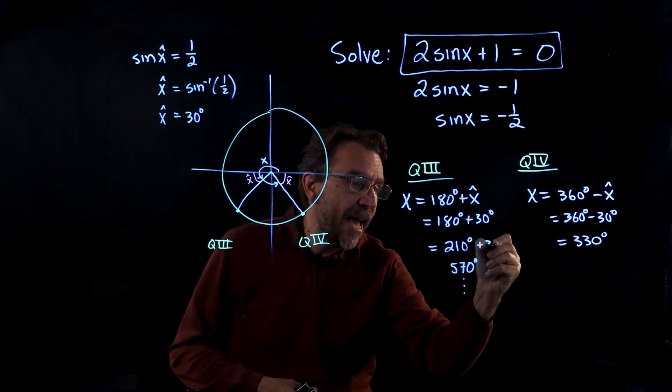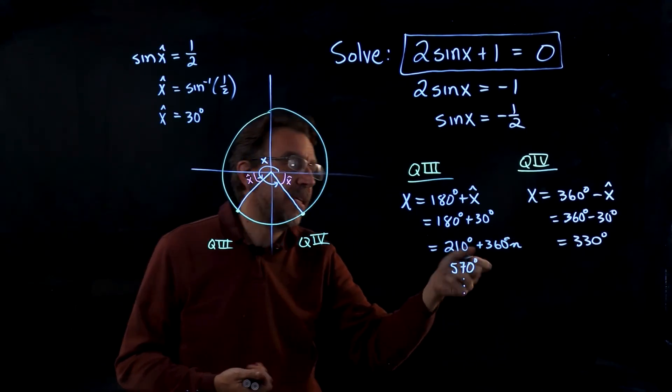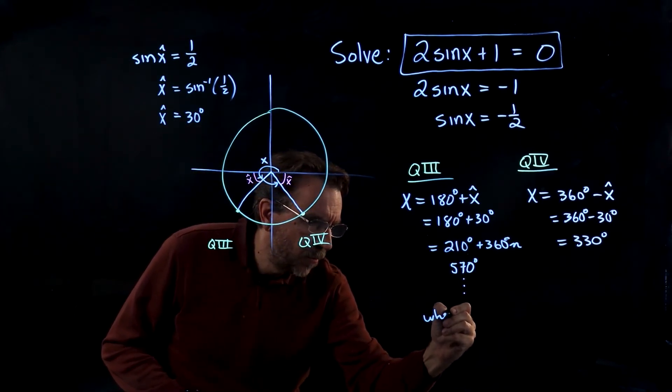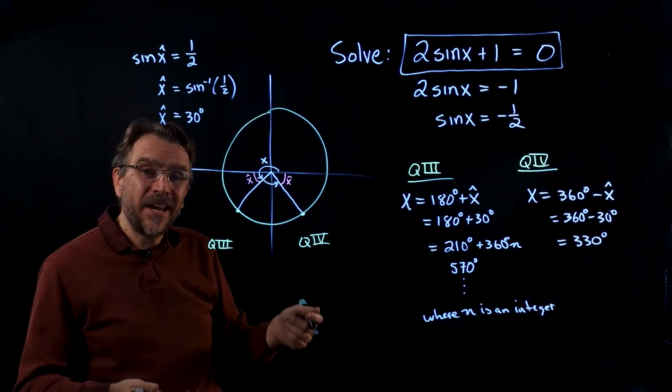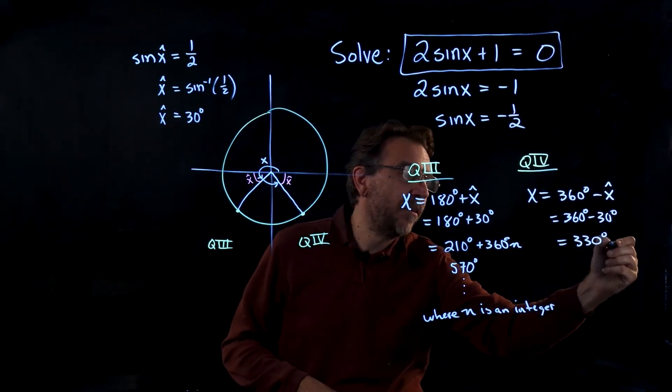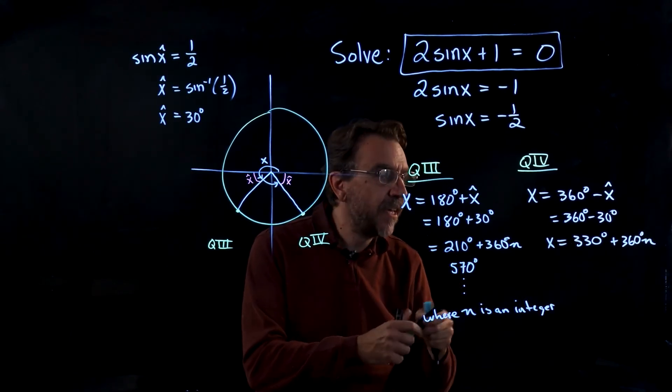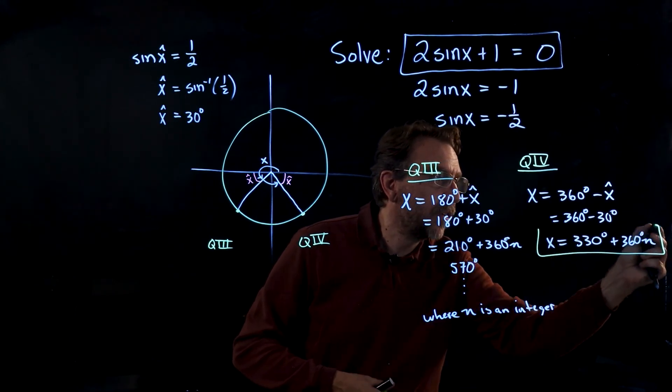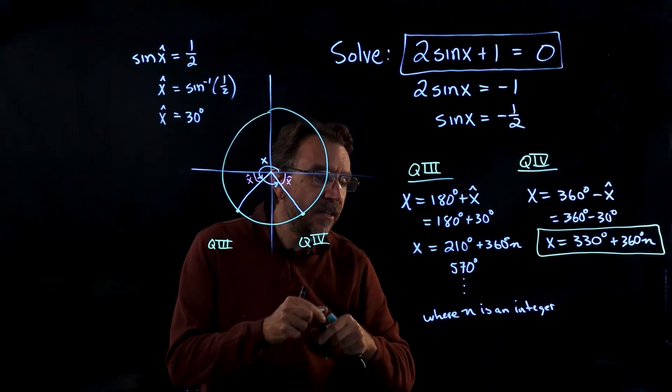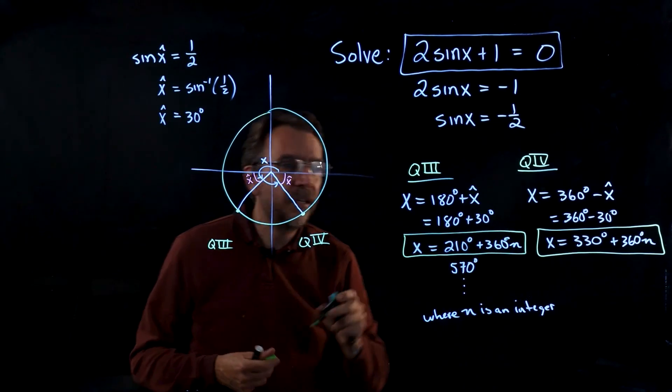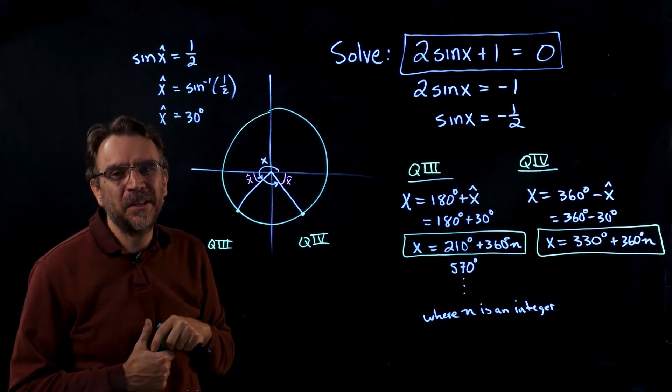We add any multiple of 360 degrees, so 360 times n, where n is an integer. We do the same thing with the 330 degrees, adding 360n there. So we have infinitely many solutions coterminating in quadrant 4, and infinitely many solutions coterminating in quadrant 2. And that's how you solve a linear trigonometric equation.